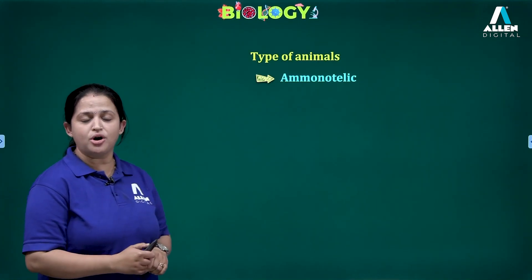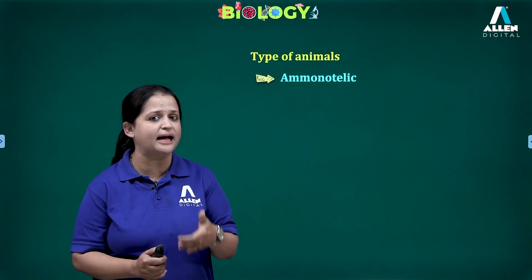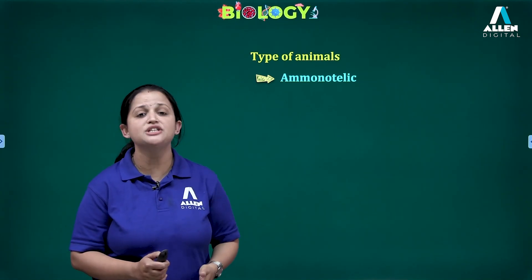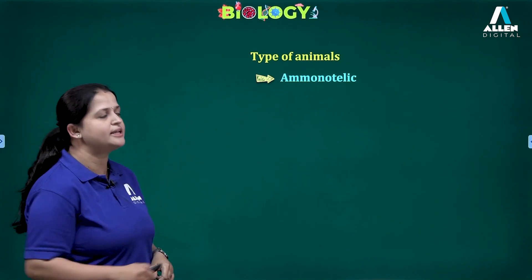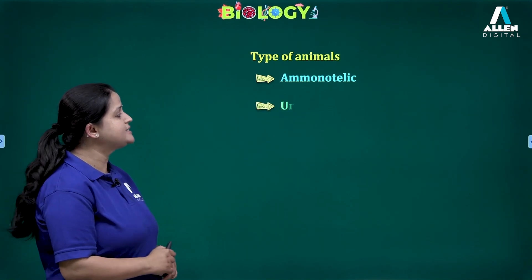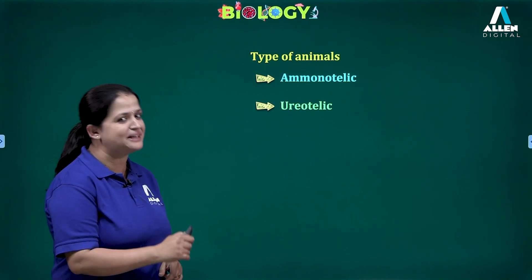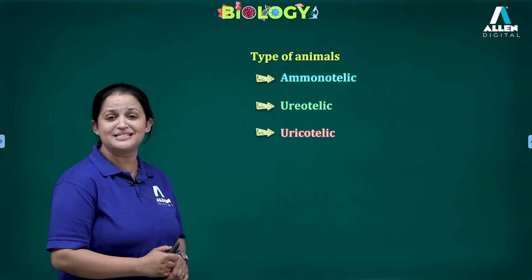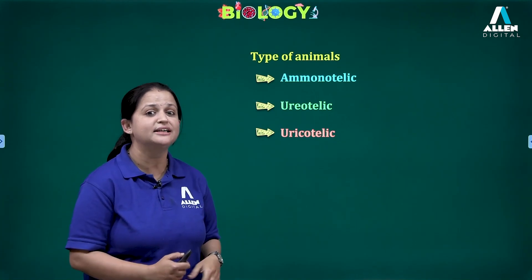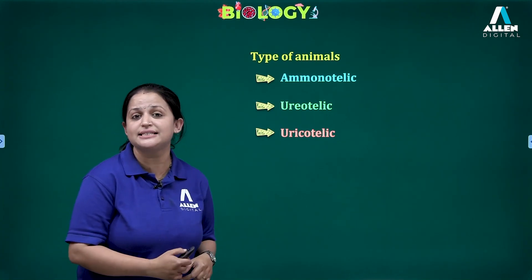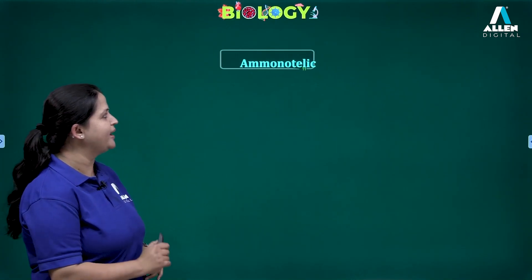Based on the type of waste material excreted by the animal, there are three different types of animals we can observe. The first is ammonotelic, the second is ureotelic, and the third is uricotelic — classified based on the type of nitrogen waste material that is excreted by the animals. Let us discuss these one by one.